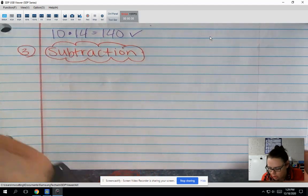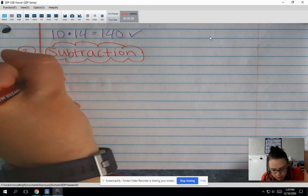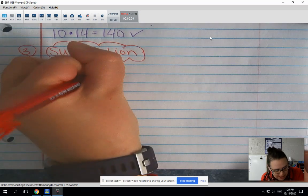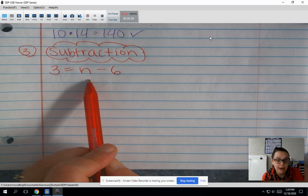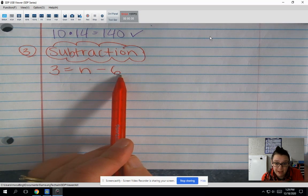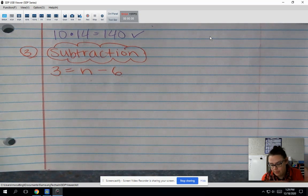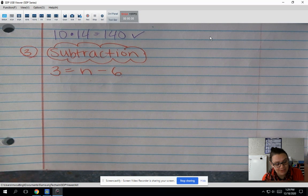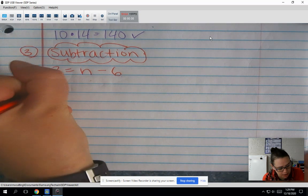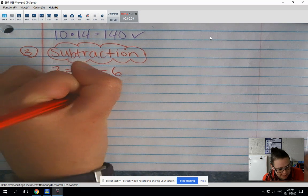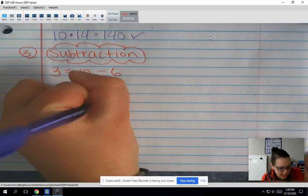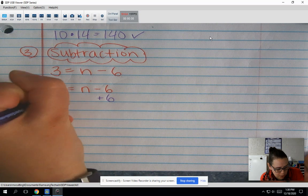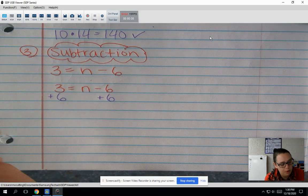Number 3 is subtraction. And our subtraction example is 3 equals n minus 6. So we took our mystery number n, we took 6 away from it, and we're left with 3. So to undo that, we're going to have to add that 6 back on. So I'm going to rewrite this. 3 equals n minus 6. And I need to add that 6 back on, and I need to do it to both sides of my equation.